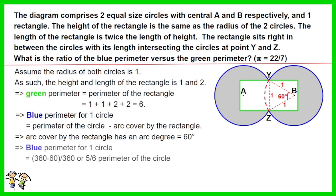As such, the blue perimeter for one circle equals 360 minus 60 degrees of the arc cover by the rectangle, then divided by 360. Simplified, you have 5 over 6 of the perimeter of the circle.